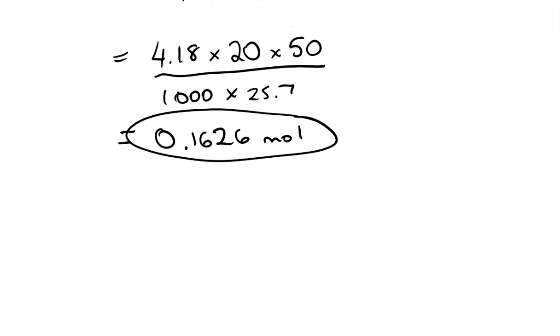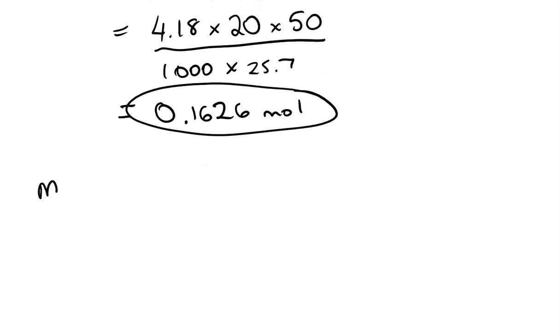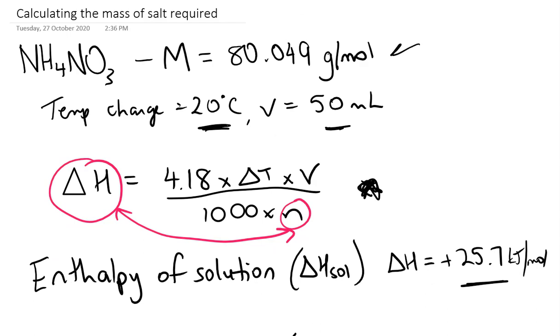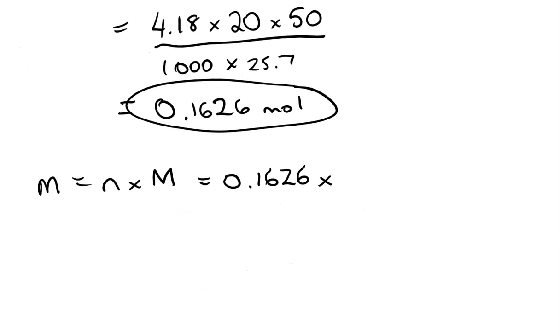Now obviously when you go and weigh this out, you don't weigh out moles, so we need to calculate mass. Mass is number of moles times molar mass. So it's just 0.1626 times the molar mass, which we calculated up the top here, which was 80.049.